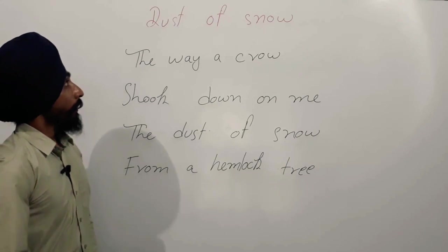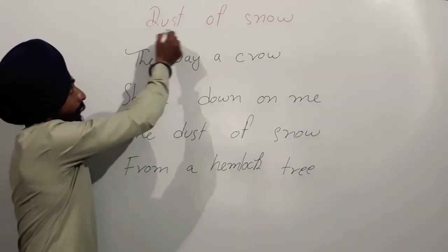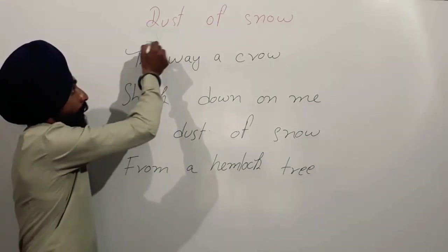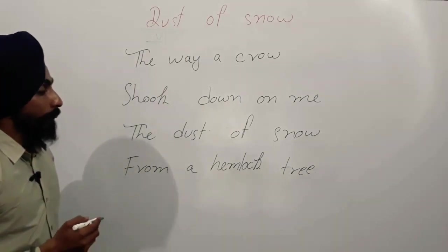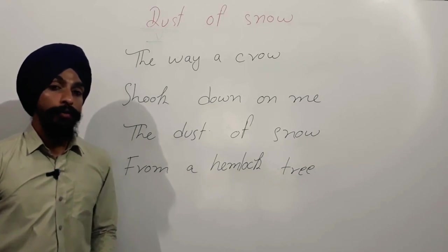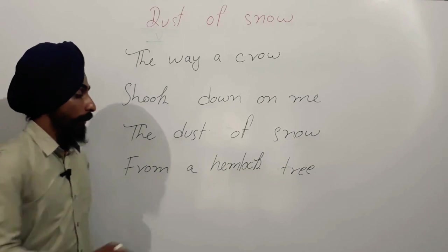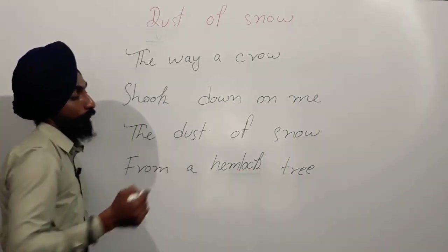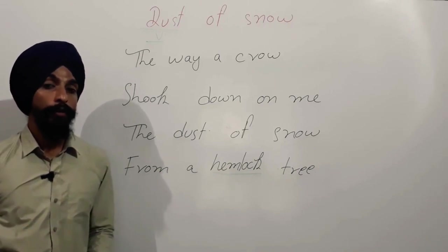First, let's discuss Dust of Snow. Dust of snow means particles of snow. In this poem, it is called a hemlock tree. The hemlock tree is a poisonous tree. It has white flowers. The branches of the hemlock tree are soft.